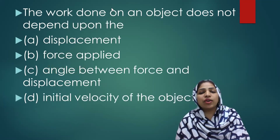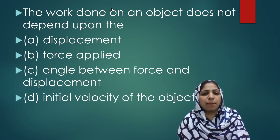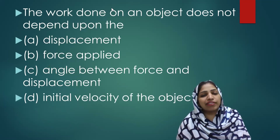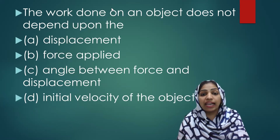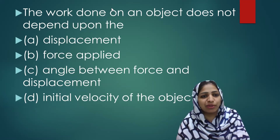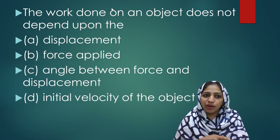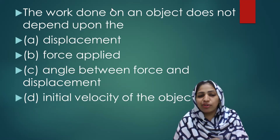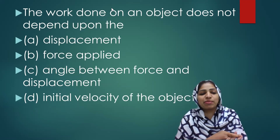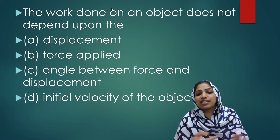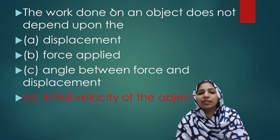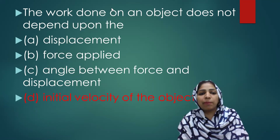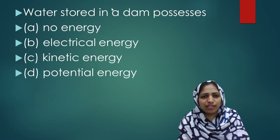The work done on an object does not depend upon what? Work done formula is force into displacement. Work can be positive, negative, or zero. The angle between force and displacement depends on force and the angle between force and displacement, but work does not depend on the initial velocity of the object. That is option D.